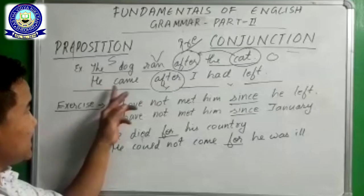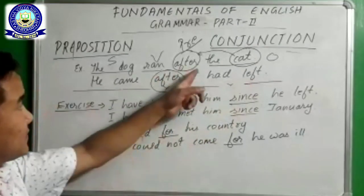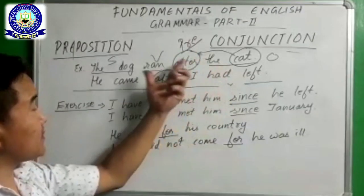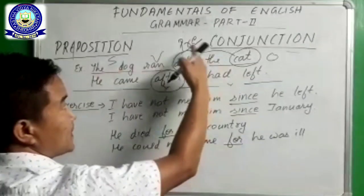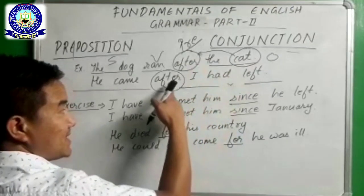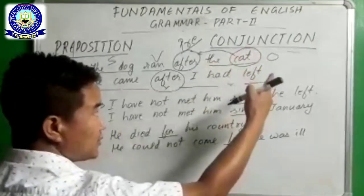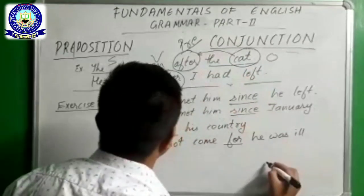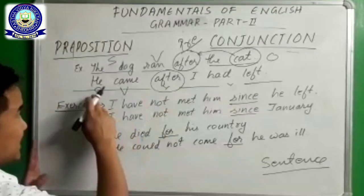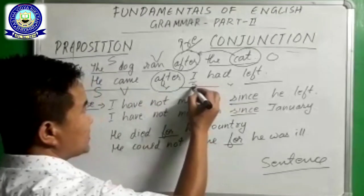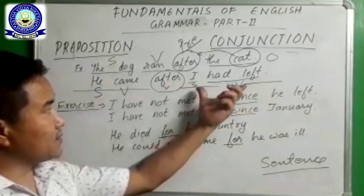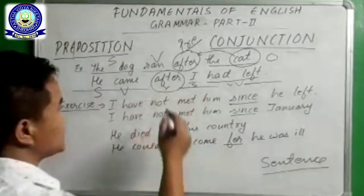But the same word 'after' — is it working as preposition in the second sentence? No, it is working as conjunction. I have told you that conjunction is a joining word that joins clause or sentence. In 'He came after I left,' we have subject and verb in the first part, and subject and verb in the second part. So here 'after' is working as a conjunction.